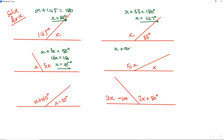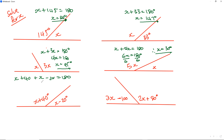Next: x plus 5x equals 180, so 6x equals 180. Dividing by 6 gives x equals 30 degrees. For the next one: x plus 40 plus x minus 20 equals 180. Collecting like terms: 2x plus 20 equals 180. 180 minus 20 is 160. Dividing by 2, x equals 80 degrees.